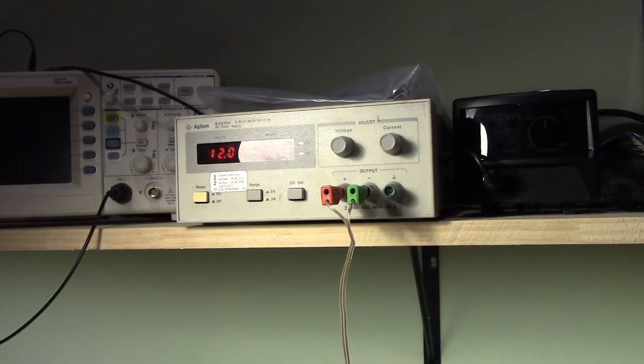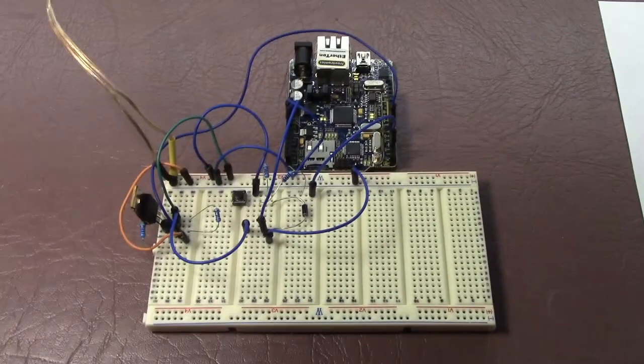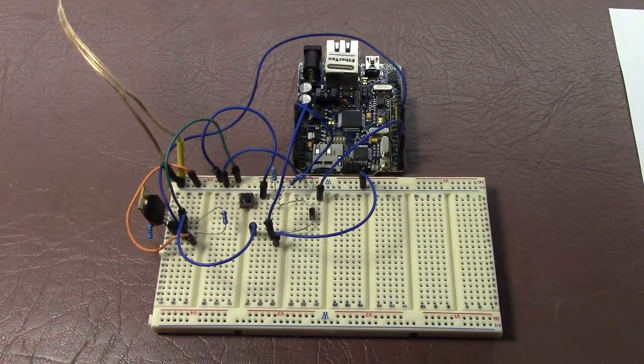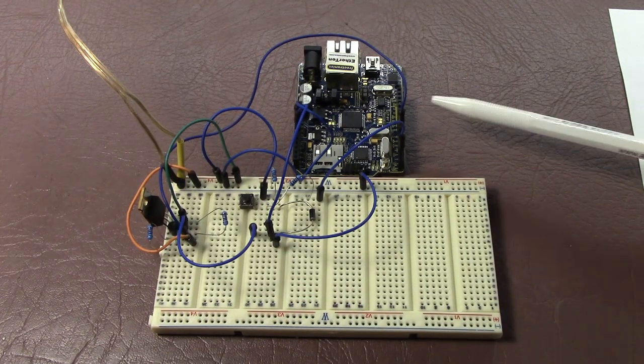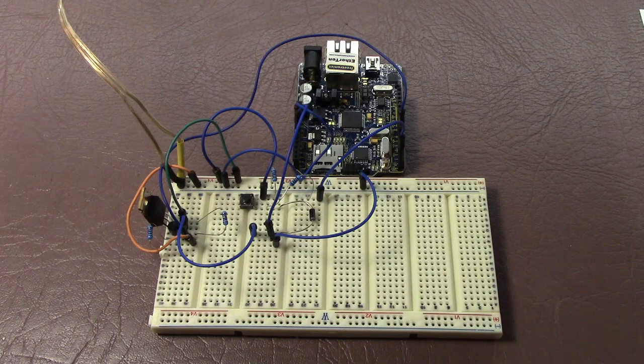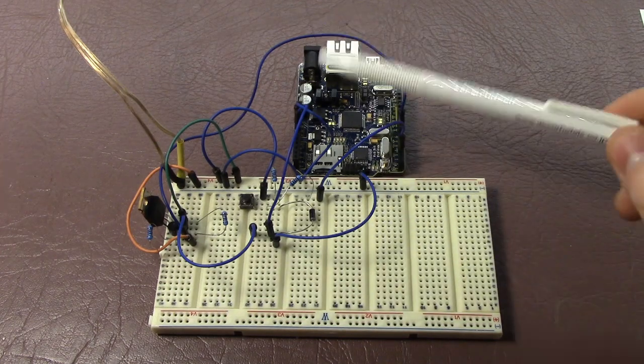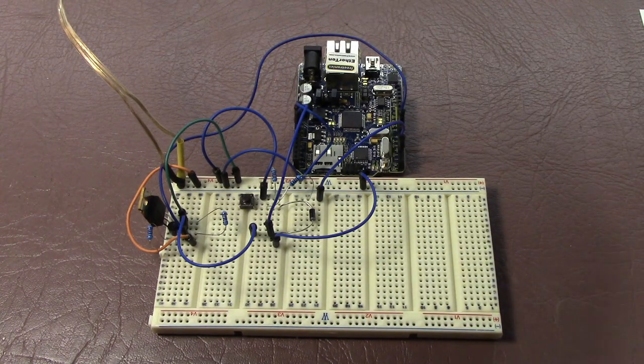Alright we've got our power supply set for just about 12V and here's our circuit on the breadboard. We're just running a pretty standard Arduino development board here and we're running it as in the schematic we're putting power into the V-in pin because we are driving this at 12V currently.